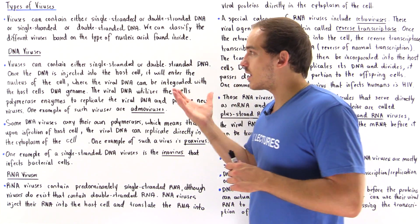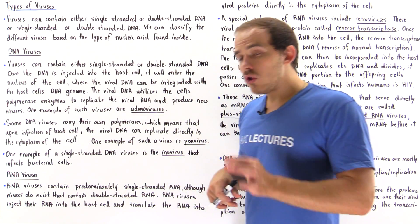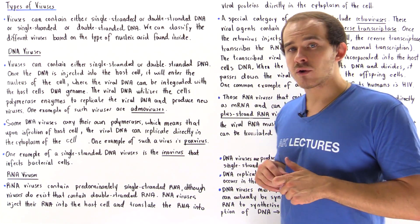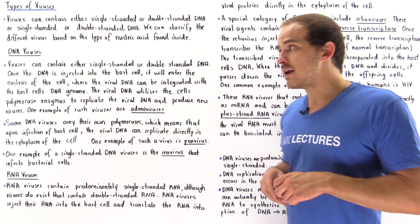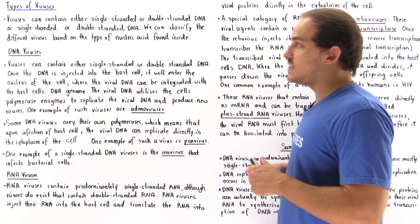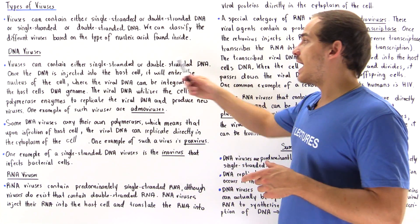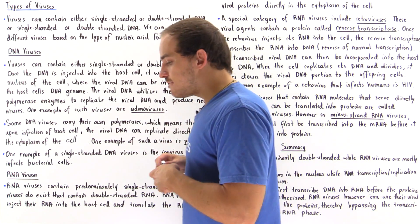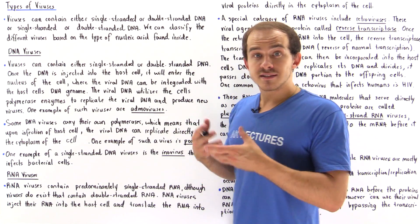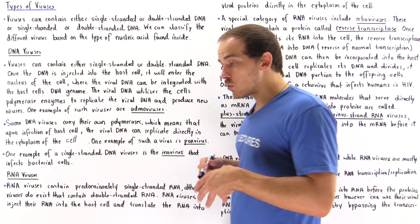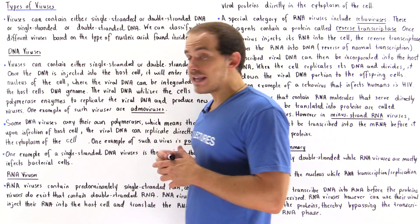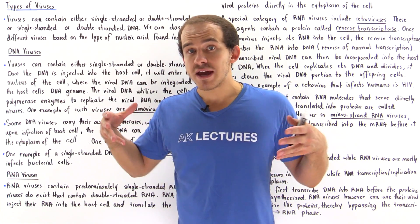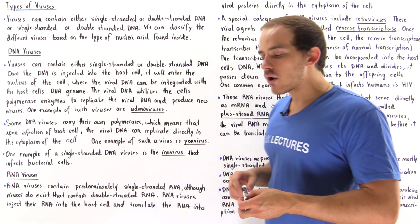Let's begin by discussing DNA viruses. Although single-stranded DNA viruses do exist — one example is the inovirus that infects bacterial cells — the more common type of DNA virus is the one that contains double-stranded DNA. The DNA virus infects a cell by essentially injecting its nucleic acid, the single or double-stranded DNA molecule, inside that cell, where the DNA ends up in the nucleus.